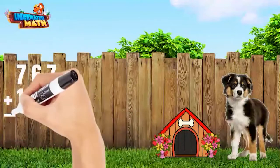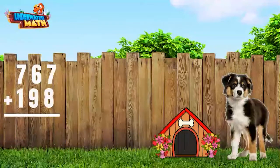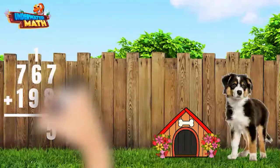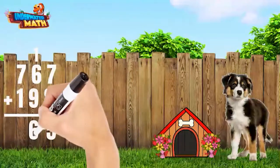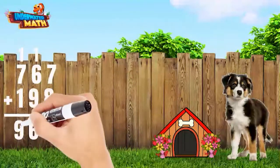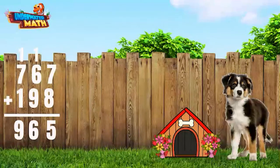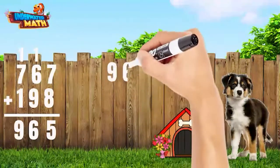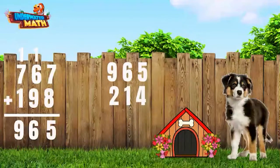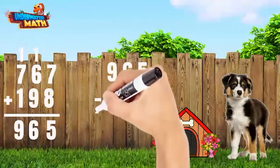198 more flowers grew in June. We can add 198 to our 767 flowers we had left. Seven plus eight is fifteen — carry the one. Six plus nine plus one is sixteen — carry the one. Seven plus one plus one equals nine. We had 965 flowers.